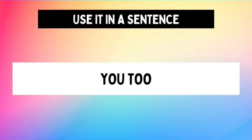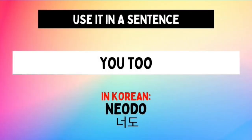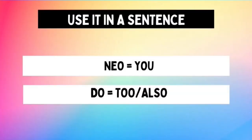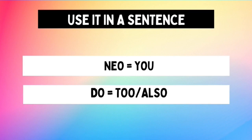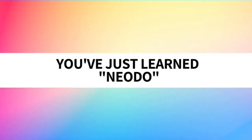Now let's look at the example phrase: 'you too.' The Korean translation is Nodo. The No part means 'you' and the Do part means 'too' or 'also.' So when we say Nodo, it's the same as saying 'you too' or 'you also.' If you remember, we have the word Nado which means 'me too' — and this time, we have Nodo which means 'you too.' And with that, you've just learned Nodo.